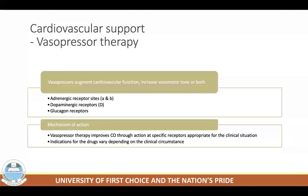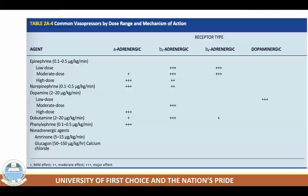Alpha adrenergic receptor agonists produce vascular smooth muscle contraction. Beta-1 adrenergic receptor agonists produce increased heart rate and contractility, whereas beta-2 receptor agonists promote generalized smooth muscle relaxation, including bronchial and vascular relaxation. Epinephrine elevates blood pressure primarily through alpha adrenergic stimulation, improving myocardial and cerebral blood flow. It is initiated at 0.1 to 0.5 micrograms per kg per minute and is particularly effective in intoxication associated with hypotension and bronchospasm.